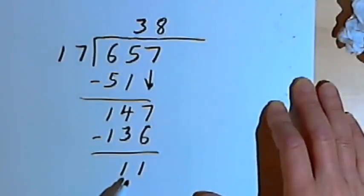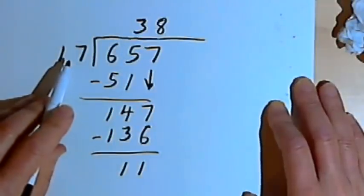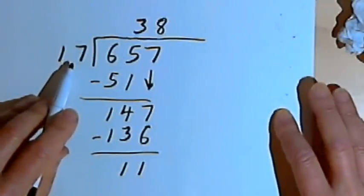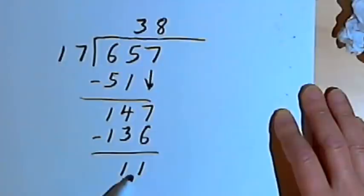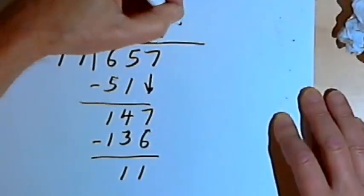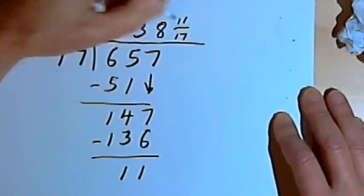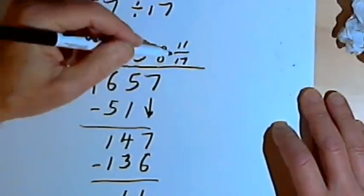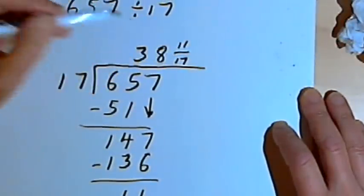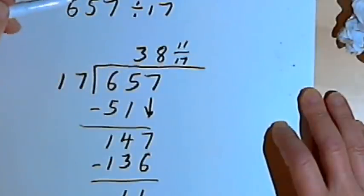Now I'm subtracting 147 minus 136, and I get a remainder of 11. There's nothing else to bring down. 11 is smaller than 17, so I got the right number. I'm going to write a fraction out of the 11 and the 17. I'll make that 11 over 17. So the result of my division is 38 and 11 seventeenths, or 38 with a remainder of 11.